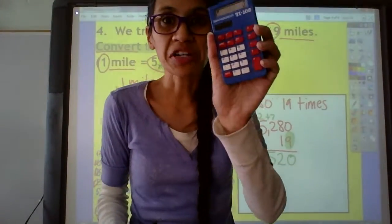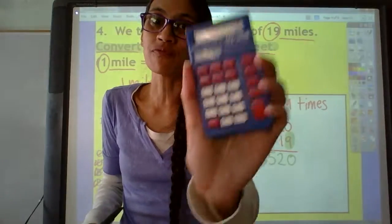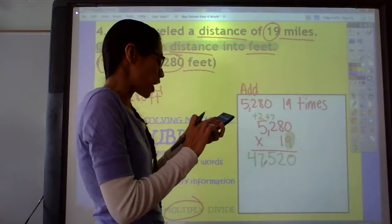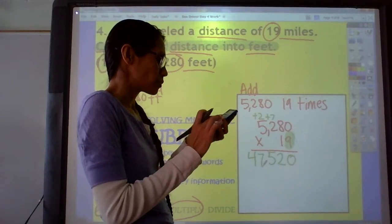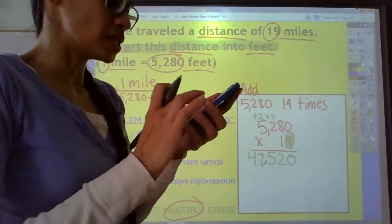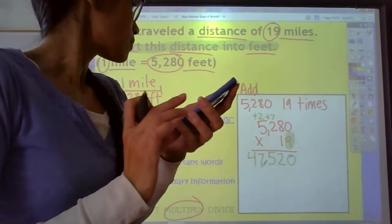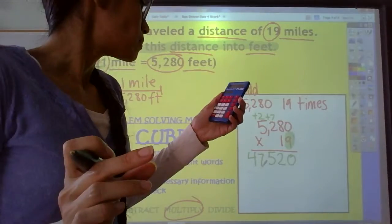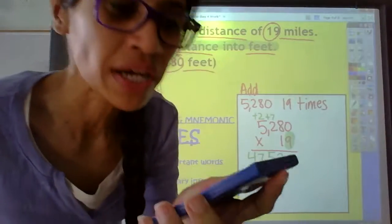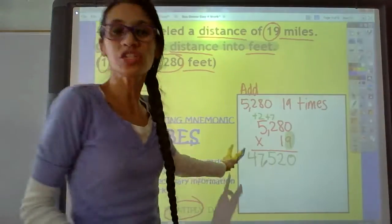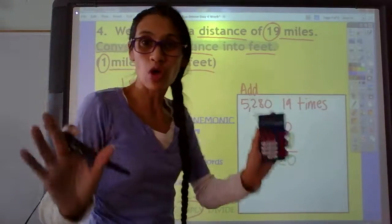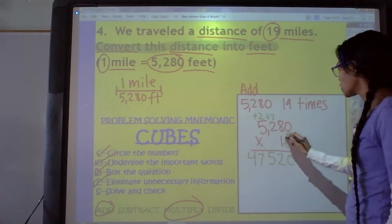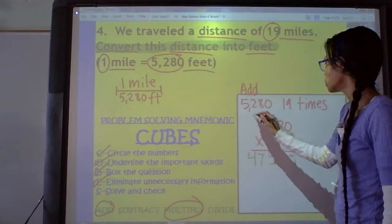But before we move on, look what appeared. The calculator appeared. We can use a calculator on your phone or a regular calculator. I want to check that before we move on. 5,280, just like that, times 9 is 47,250. No, I didn't even say that right. 47,520, which is what we have up here. So, so far we are on the right track. Moving on, we are done with that 9. Cross it out. I'm done. Done with you.